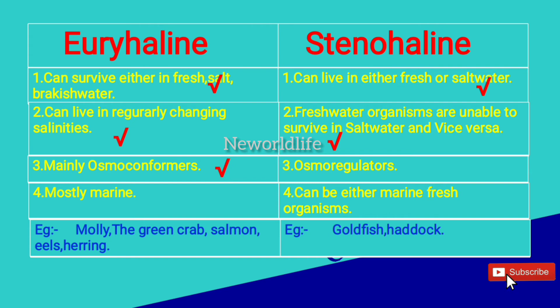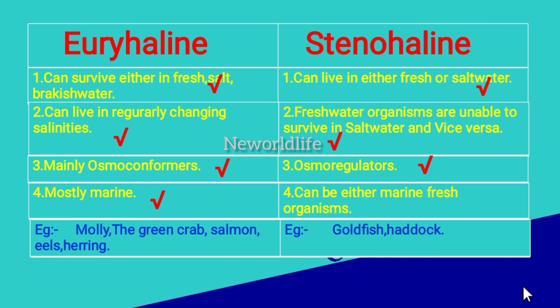Euryaline organisms are mainly osmoconformers, while Stenohaline organisms are osmoregulators. Euryaline organisms are mostly marine, whereas Stenohaline can be either marine or freshwater organisms.